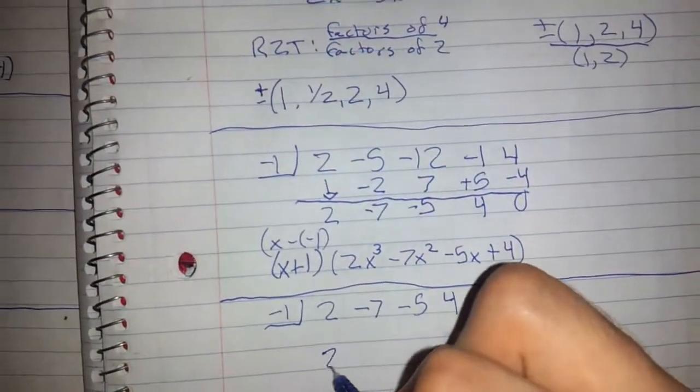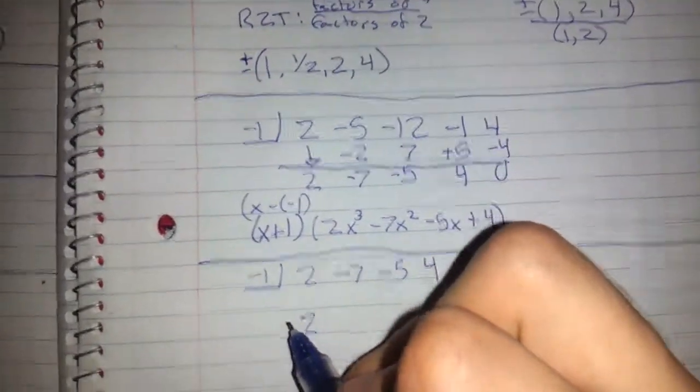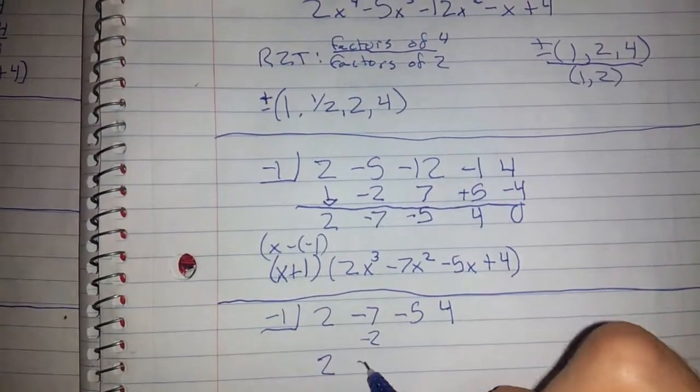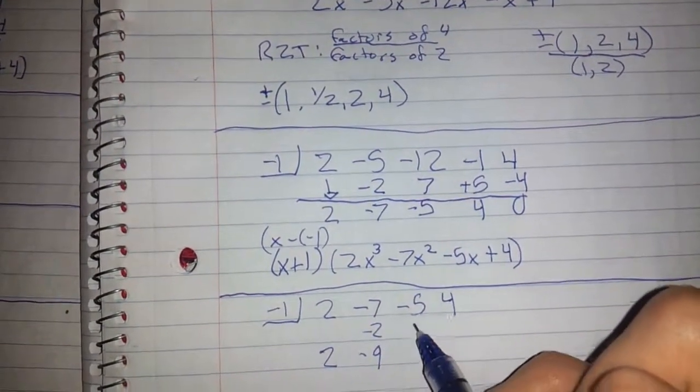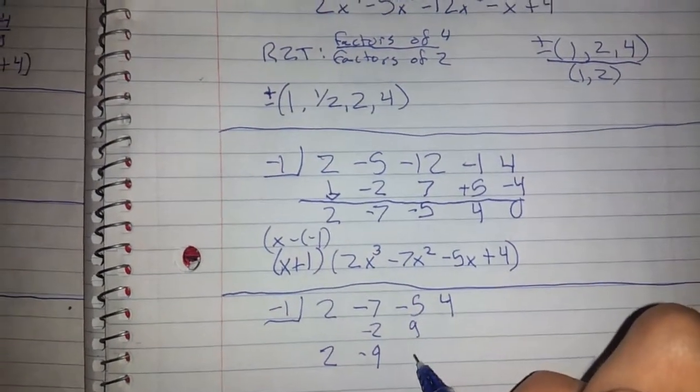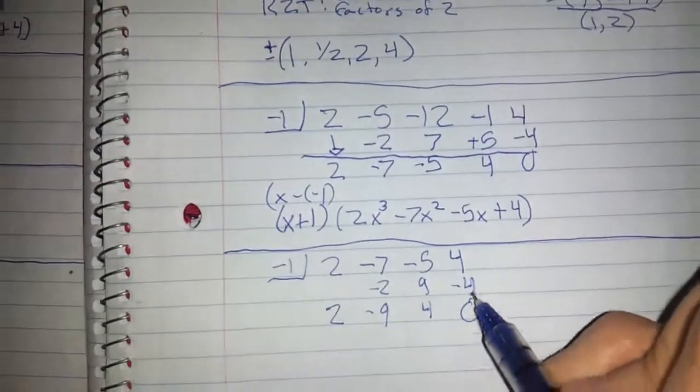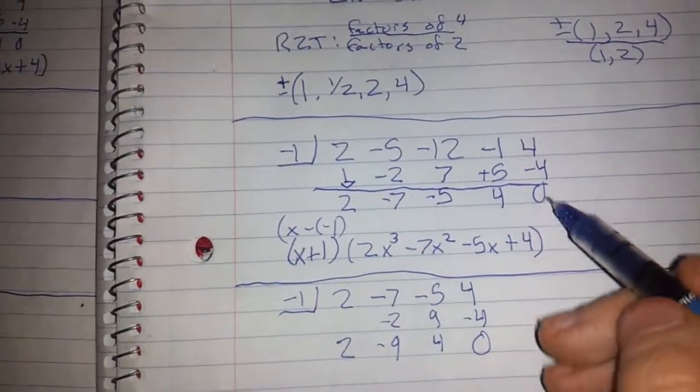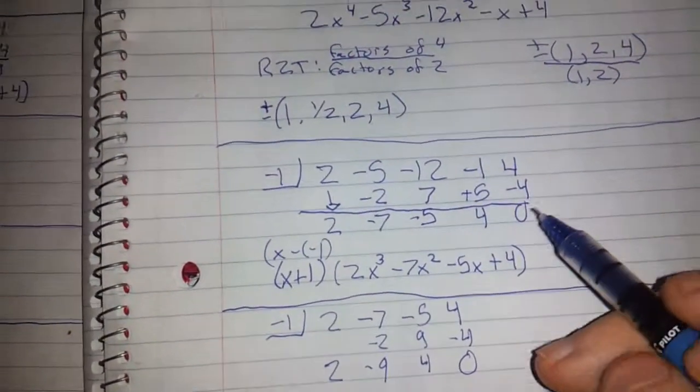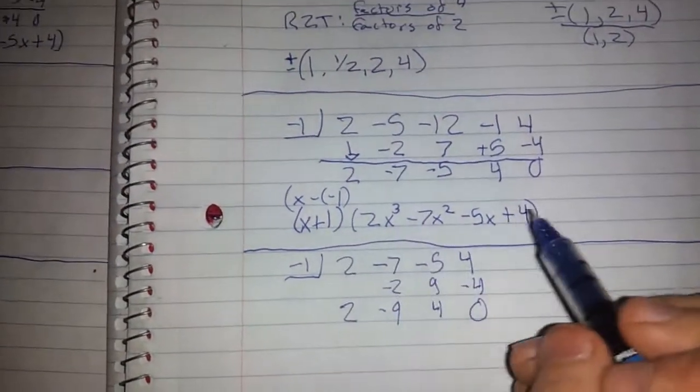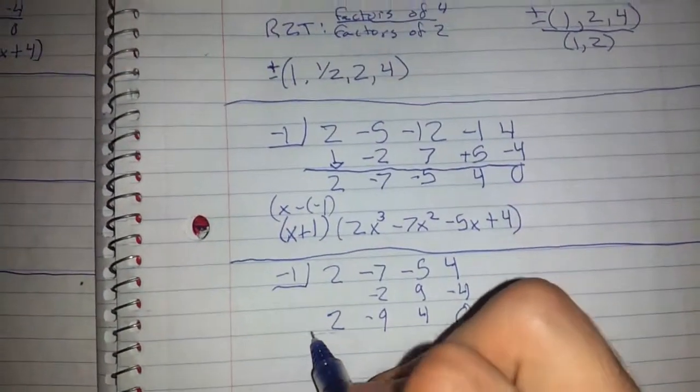So we got 2. That multiplied is negative 2. So we have negative 9. We get a 9. Then these added are 4. We get negative 4. And no remainder again. This is the important part. You want that 0. That's how you know that you're going to get no remainder. And no remainder is good because then it gives you this nice problem right there.